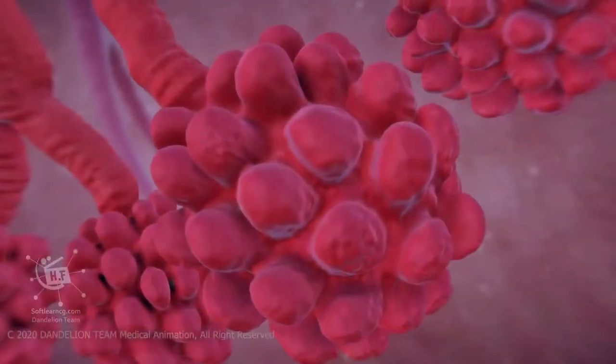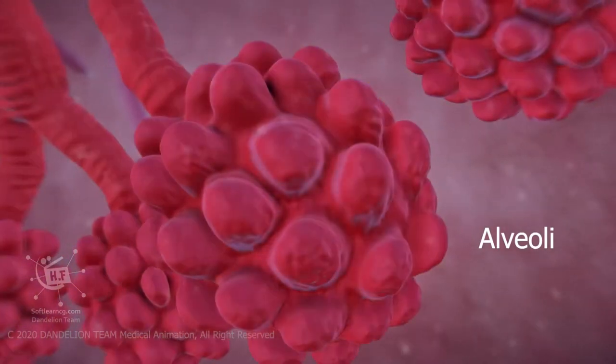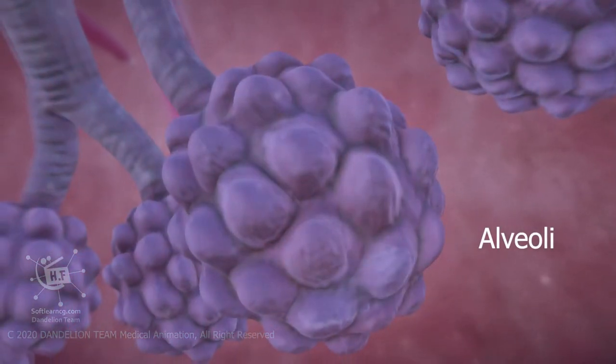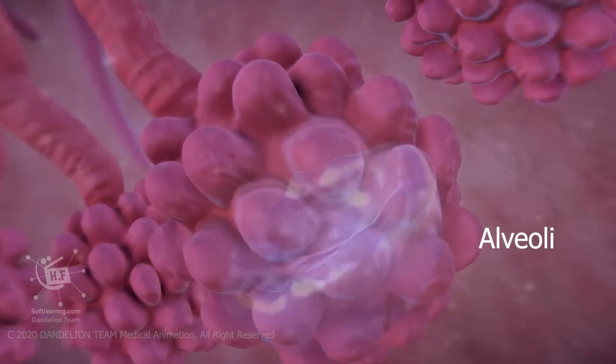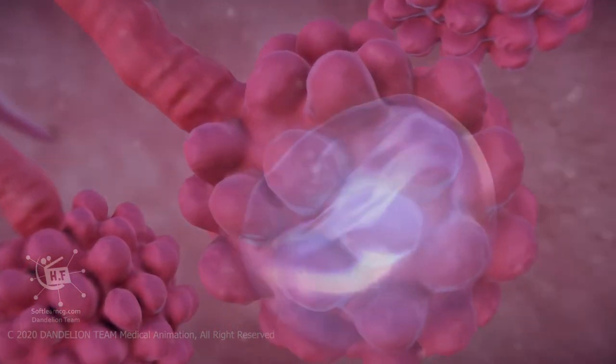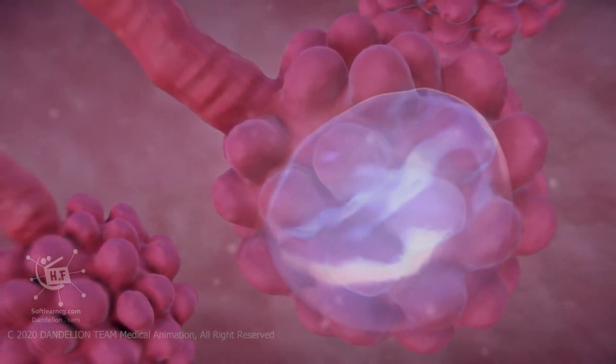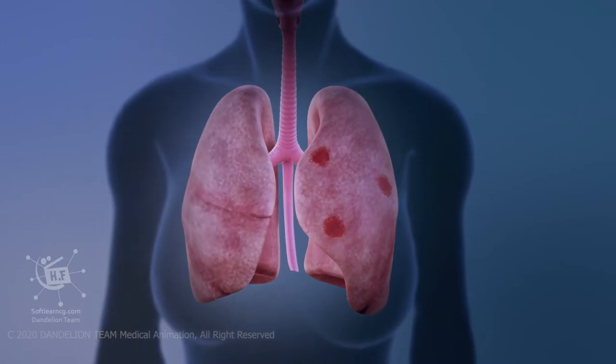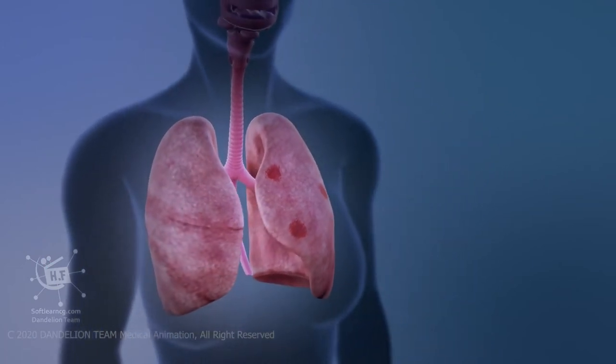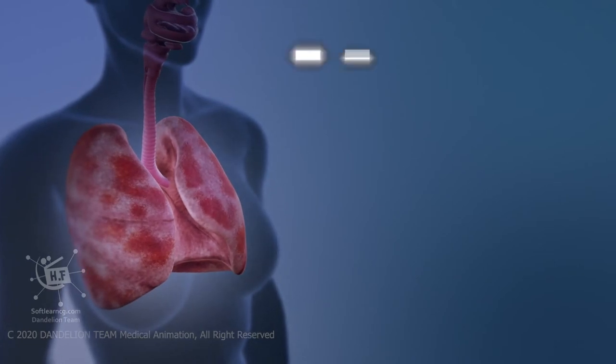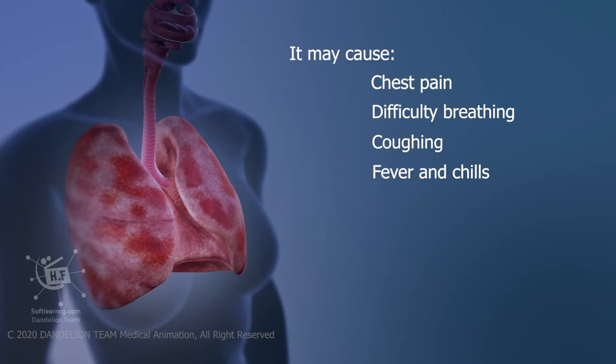Then your bronchioles and alveoli become inflamed. This inflammation can cause your alveoli to fill with fluid, making it difficult for your body to get the oxygen it needs. It could affect one lobe of your lungs, or you could have many areas of both lungs affected. It may cause chest pain, difficulty breathing, coughing, fever and chills, confusion, headache, muscle pain, and fatigue.